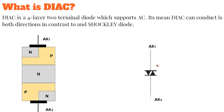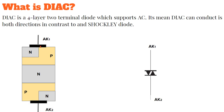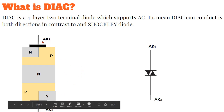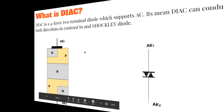Here you can observe in the symbol that there are two thyristors connected back to back with each other. On the left side of the slide, you can observe that there are two P-type layers and three N-type layers, and there are two terminals AK1 and AK2. I call them AK1 and AK2 because this is a bidirectional device — it can conduct current in both directions.